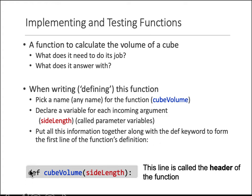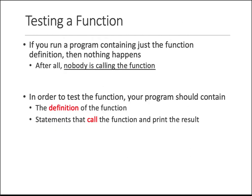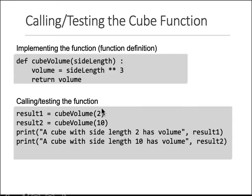When you put all this information together, you precede it with the def keyword — that is your function declaration or the header of the function. You define a function with the keyword def, give it a name, and list its parameters. In this case there is only one parameter; if there were multiple, you would separate them with commas.